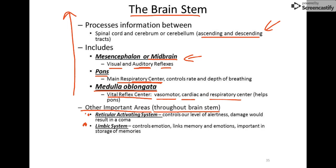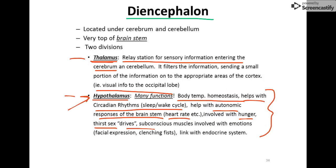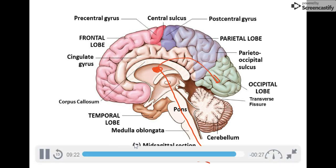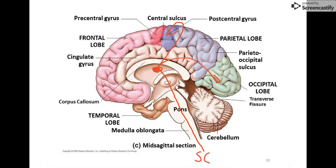To recap the brainstem from bottom up: medulla, pons, midbrain, then up to the hypothalamus and thalamus, which together make up the diencephalon. If a signal comes into the brain, it travels up from the spinal cord through the medulla, pons, midbrain, hypothalamus, to the thalamus. The thalamus then relays it — vision goes to the occipital lobe, touch goes to the primary sensory area. Commands going out follow the same path in reverse down to the spinal cord and out to the body.